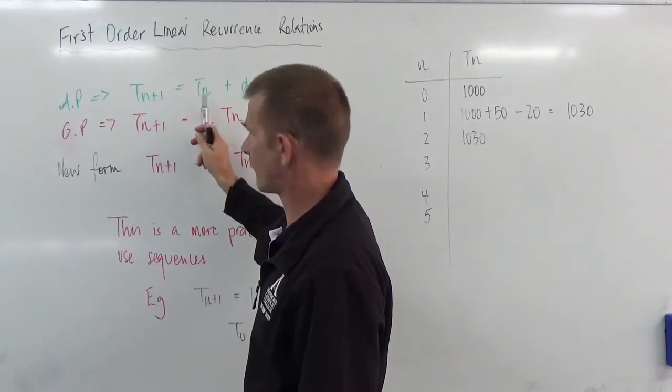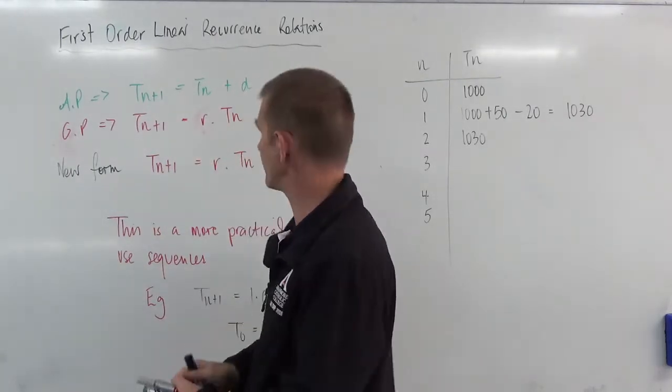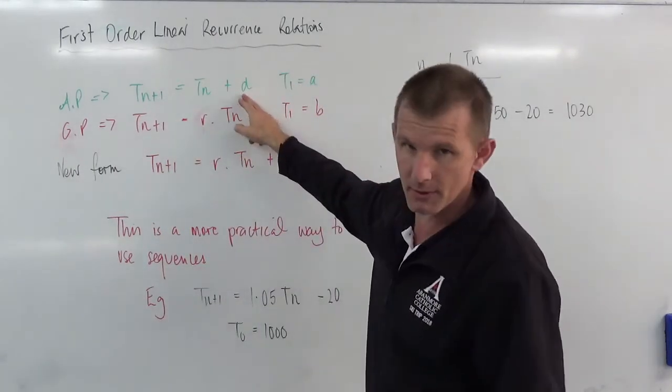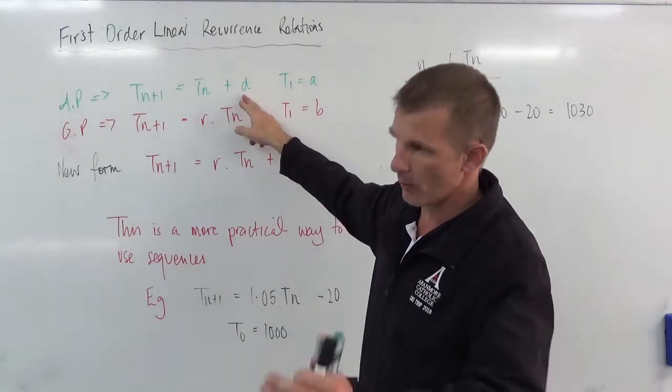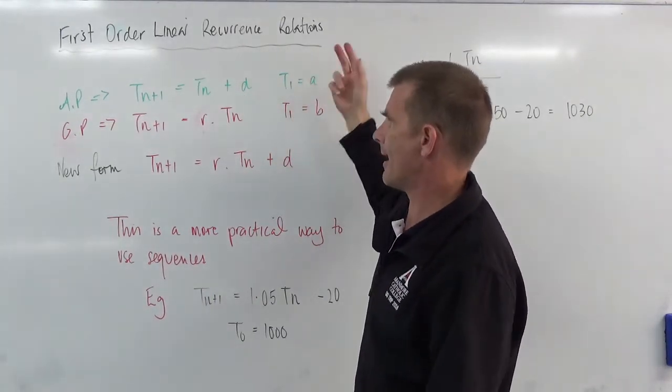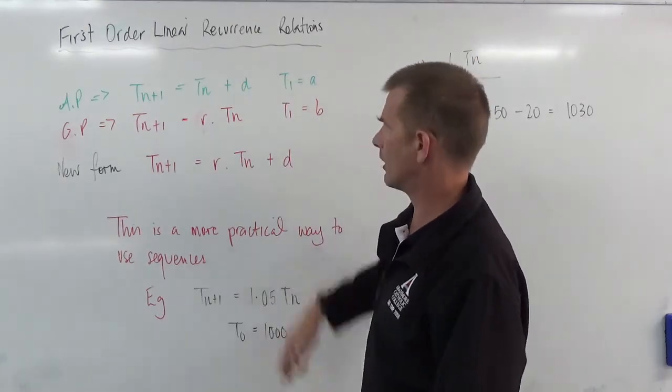You see we're referring to the term before so it's a recursive formula. We're adding something. This could be a negative number but we're adding something. And we start at some point A. It doesn't really matter where we start, I'm not so worried about that.